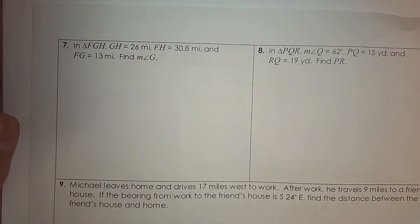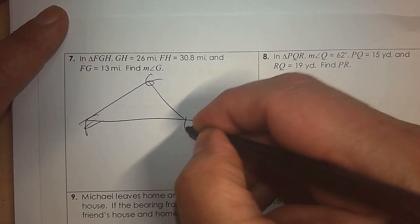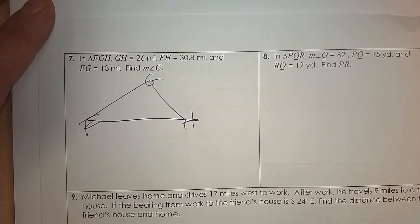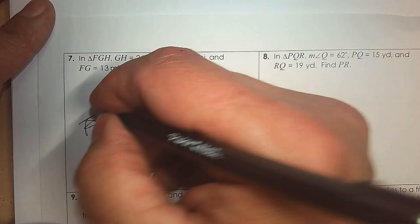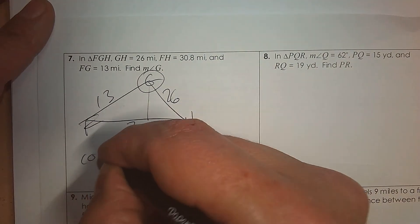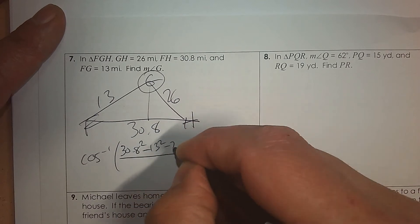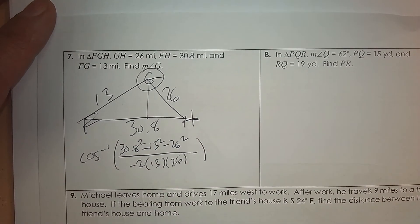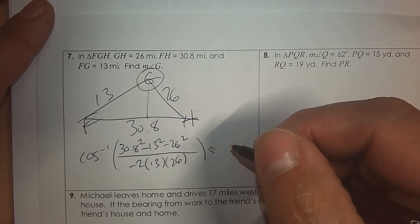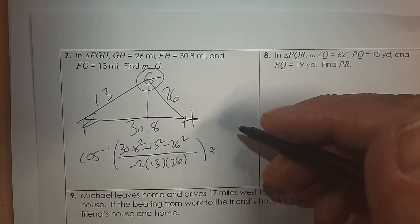Again, number 7. Draw a triangle. Label it FGH. It says G to H is 26. F to H is 30.8. And F to G is 13. And it says find angle G. So what's opposite? So it's inverse cosine. So 30.8 we'll use once. And 13 and 26 will repeat twice in the formula. Don't forget the negative 2 on the bottom. And that's it. Be careful how you type it in. Press pause. And then press play when you're ready to see if you did the answer correctly. So it's about 98.8 degrees.